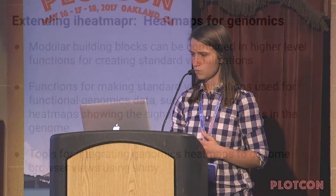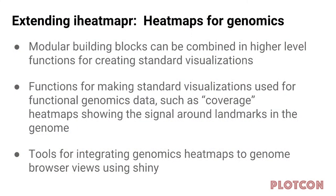I'm going to jump to a specific focus on genomics data. In genomics there are certain standard kinds of heat maps that you often want to make, and we can make functions that build on these modular building blocks to create some of these standard visualizations. One of these standard visualization types is called a coverage heat map, where you show the signal around certain landmarks in the genome. I'll also show tools for integrating those kinds of heat maps with other views using Shiny.